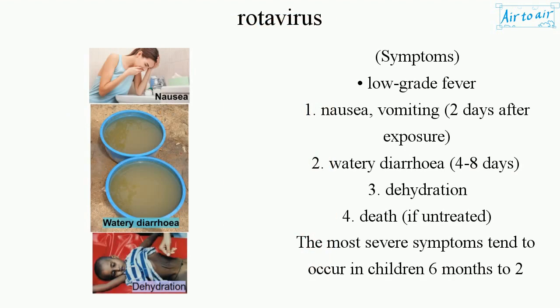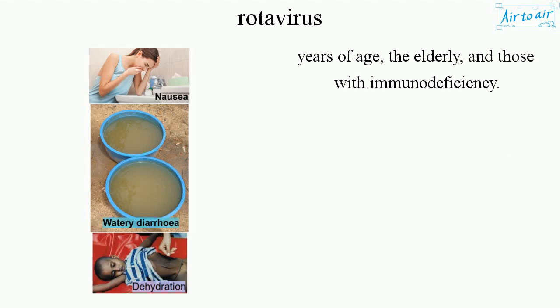Symptoms: 1. Low-grade fever, nausea, vomiting two days after exposure. 2. Watery diarrhea for 4 to 8 days. 3. Dehydration. 4. Death if untreated. The most severe symptoms tend to occur in children 6 months to 2 years of age, the elderly, and those with immunodeficiency.